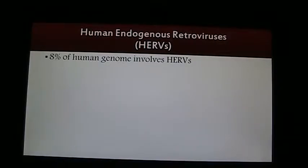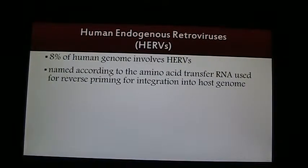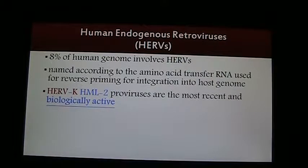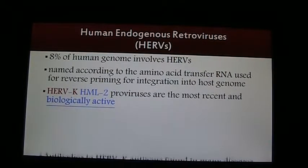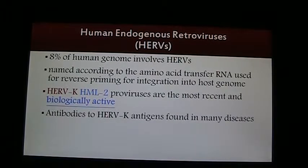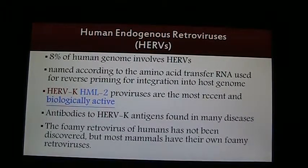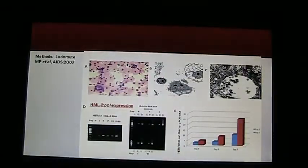So what are these HERVs, the human endogenous retroviruses? Eight percent of the human genome involves HERVs. They are named according to the amino acid transfer RNA used for reverse priming for integration into the host genome. HERVK HML2 proviruses are the most recent and the most biologically active group. Antibodies to HERVK antigens have been found in many diseases. The foaming retrovirus of humans has not been discovered, but most mammals have their own foaming retroviruses.